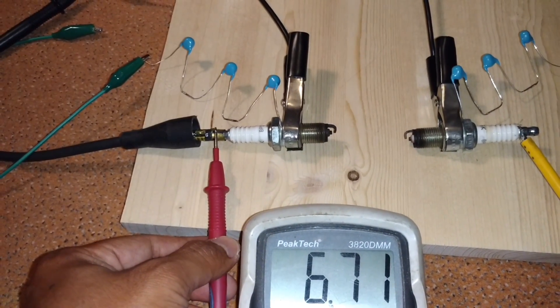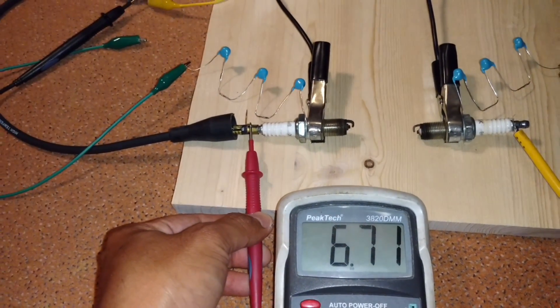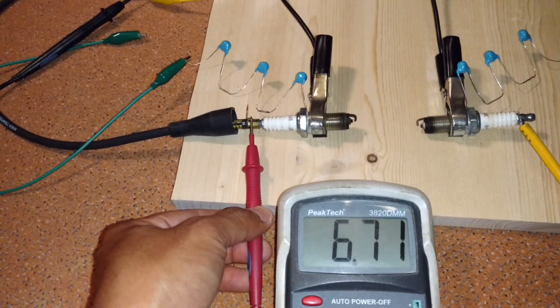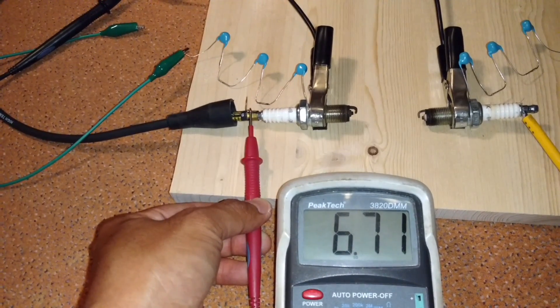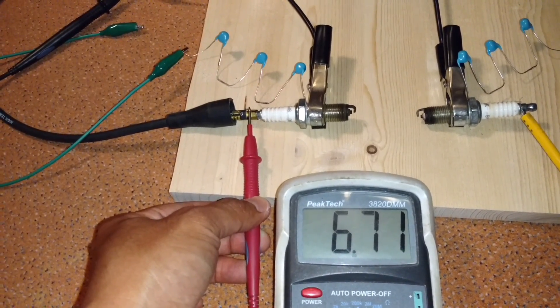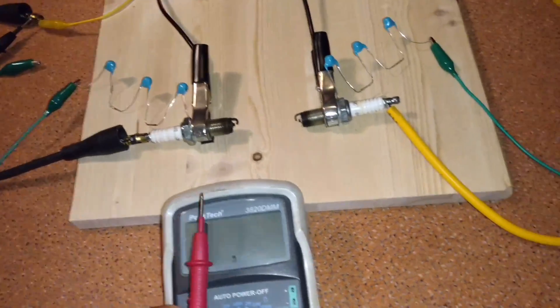This carbon core ignition wire has a resistance of 6.7 kilo ohms.